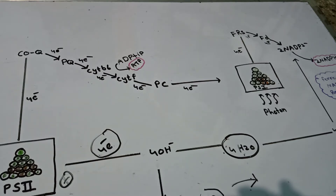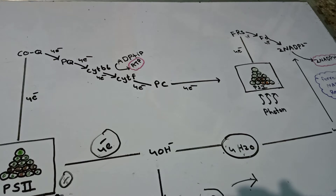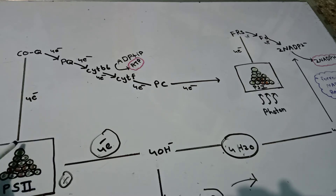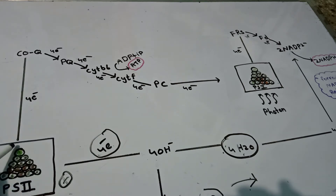Let's begin with Photosystem 2. What are photosystems? Photosystem 2 is a protein complex which consists of pigment molecules. This protein complex consists of two sub-complexes: an antenna complex and a core complex. The antenna complex consists of accessory pigments, and the core complex consists of Chlorophyll A molecules.